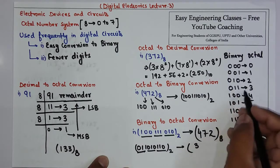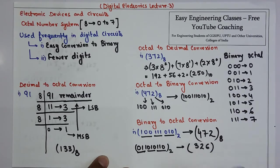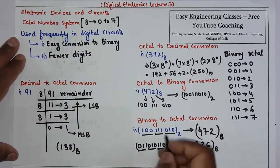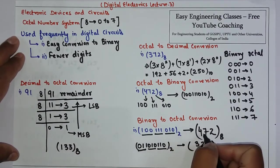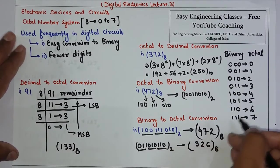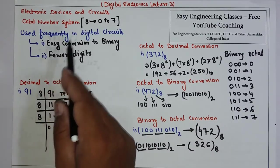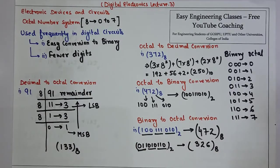0 1 0 is 2, and 1 1 0 is 6, so the octal result is 3 2 6. Notice that the binary number had 9 digits, but the octal representation has only 3 digits. This proves the second advantage of using octal — it requires fewer digits than the equivalent binary number.